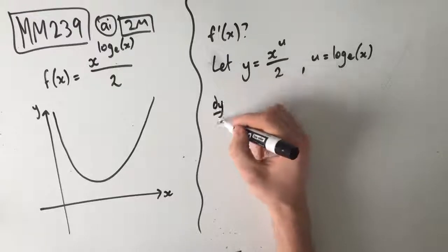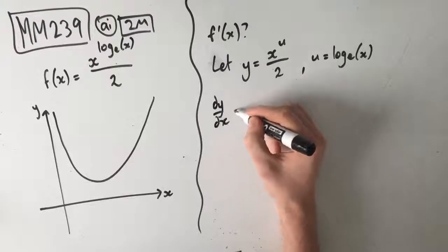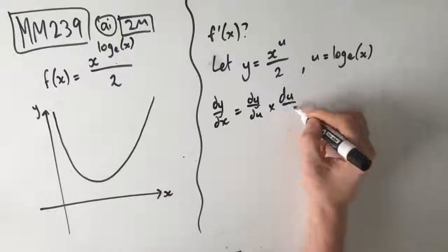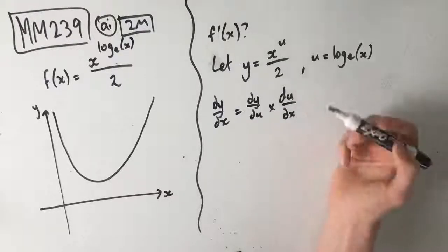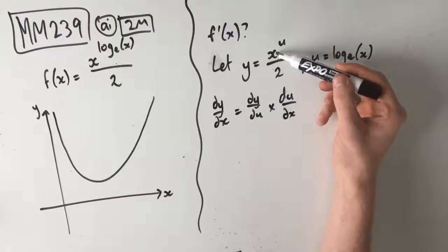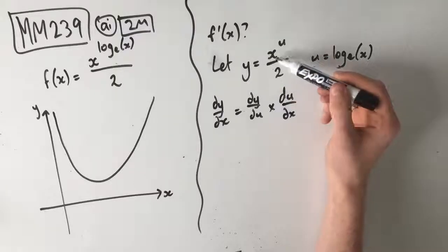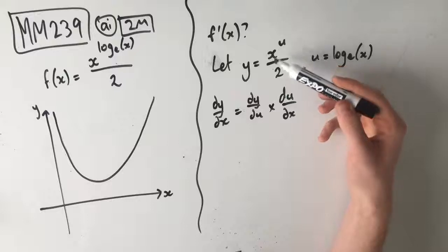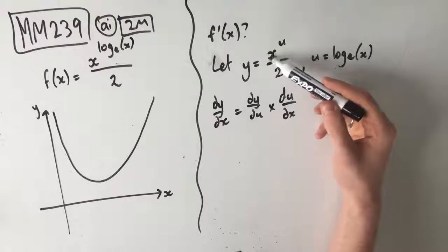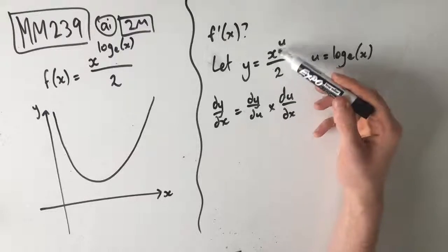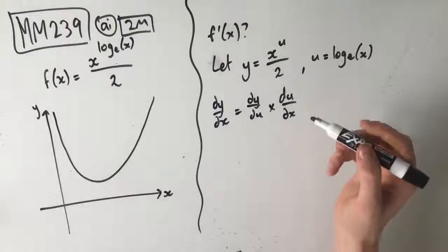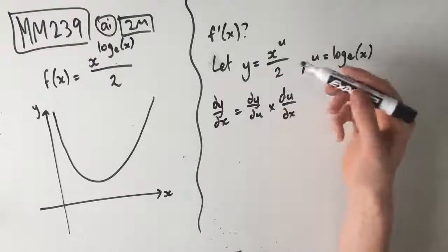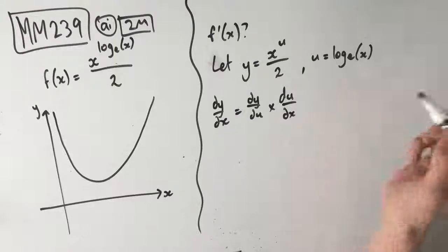The way that we figure out our derivative is dy dx equals dy du times du dx, which is our regular chain rule. The only problem is this function y equals x to the power of u over 2 is not only in terms of u, it's in terms of x as well. So we don't actually want this x here — we want only u. We actually need to find x in terms of u to replace this so that we can actually differentiate it.